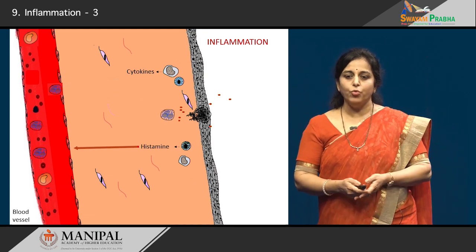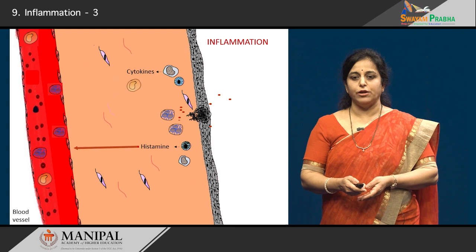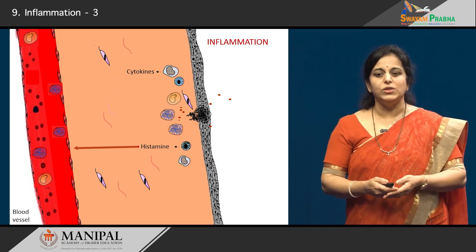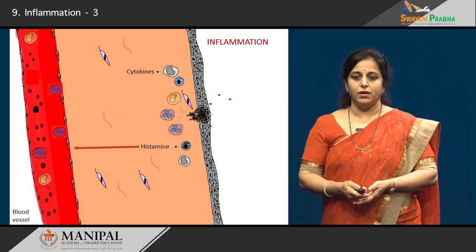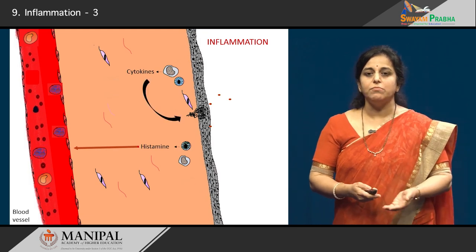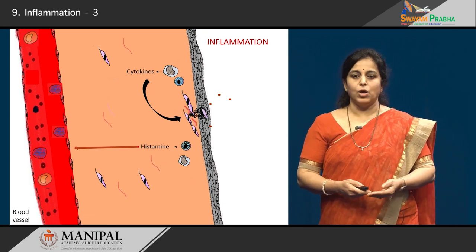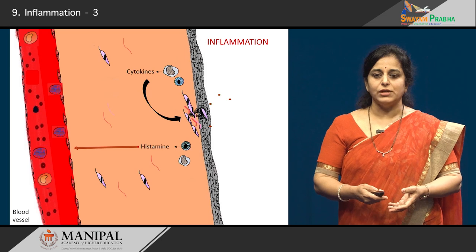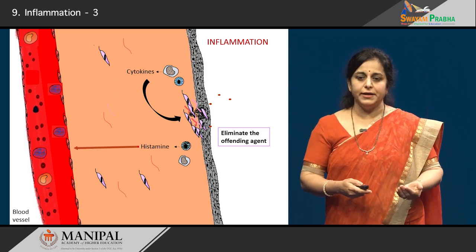These WBCs — predominantly neutrophils and monocytes — exit the circulation and come to the site of injury. These two cells are called phagocytes. Phago means eat and cyte means cell, so these cells eat up all the injurious agents, microorganisms, and dead tissues. Once they have eliminated this and lived their lifespan, they die. The cytokines released by the macrophages cause proliferation of fibroblasts which lay down collagen, so the injured tissue is replaced by scar.